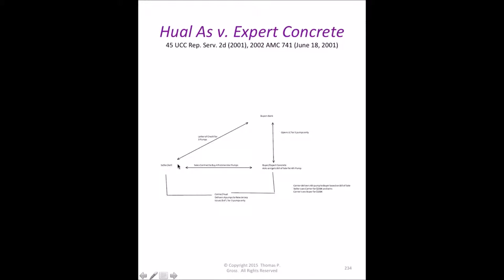The buyer asks the seller to ship all four pumps, saying he's working out the financing and should have it resolved by the time the pumps arrive in New Jersey. The seller agrees — he packs three pumps together and the fourth pump separately, and ships them. He presents the bill of lading for the three pumps to the buyer's bank and is paid for those three, but holds the bill of lading for the fourth pump, knowing the carrier will only release three pumps to the buyer.